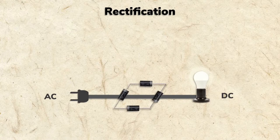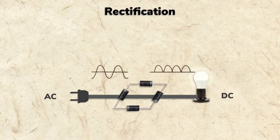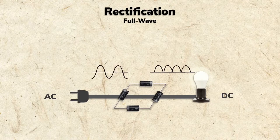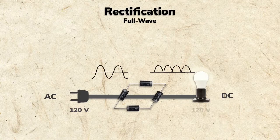Four diodes can also be arranged in a bridge circuit to use both sides of the AC wave. This is called full-wave rectification, and it turns almost all of the AC voltage into DC voltage.